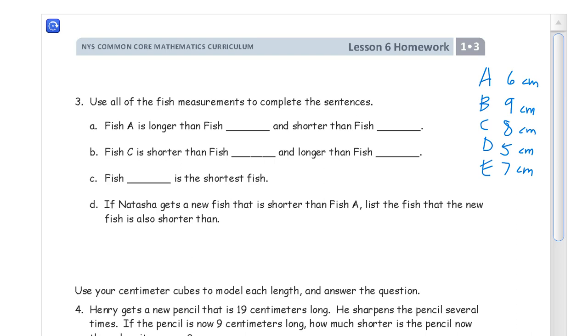All right, now we can just look at these numbers and answer the questions. Fish A is longer than what fish? Fish A is 6, so the only one it's longer than is fish D because fish D is 5. And it's shorter than any other fish, right, because it's shorter than fish B, C, and E. So let's say it's shorter than fish C.